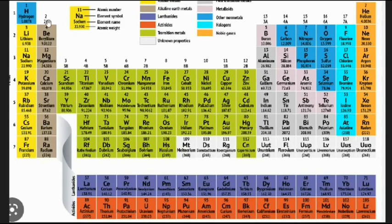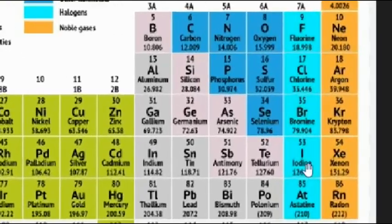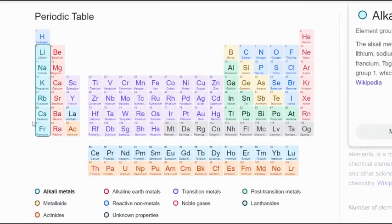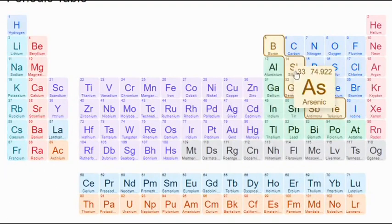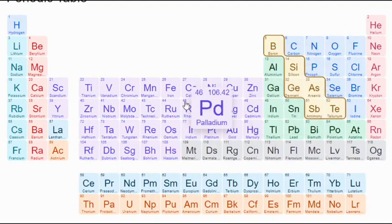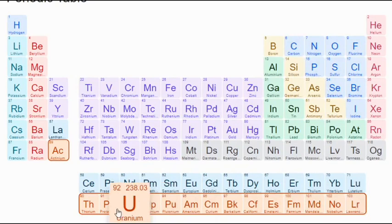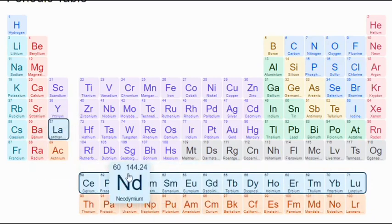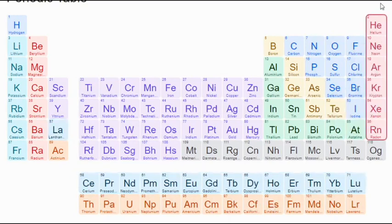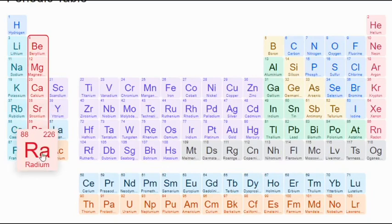The groups are 1A, 2A, 3A, 4A, 5A, 6A, 7A, and 8A. The 7A group elements are called halogens, and the 1A group elements are called alkali metals. Metalloids have the property of both metals and non-metals. The bottom rows are called actinides and lanthanides — they belong to periods 6 and 7 but are placed separately based on their properties. Noble gas elements are in group 8A. The 2A group elements are called alkaline earth metals.